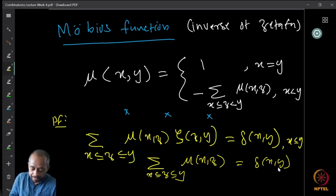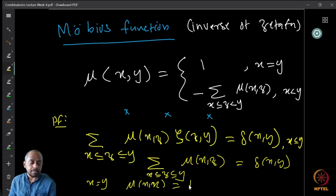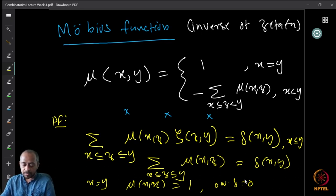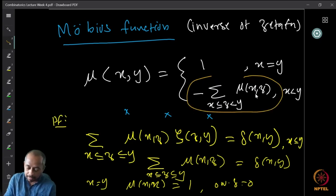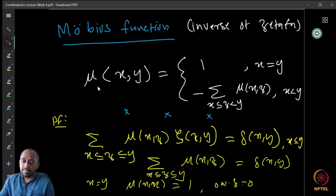If x = y, there is only one term, so mu(x, x) = 1. Otherwise, since delta(x, y) = 0 when x ≠ y, we can move the last term mu(x, y) to the left side. Because the summation equals zero, we get mu(x, y) = − summation over x ≤ z < y of mu(x, z). That is the proof that mu is indeed the inverse of zeta, i.e., the Möbius function.